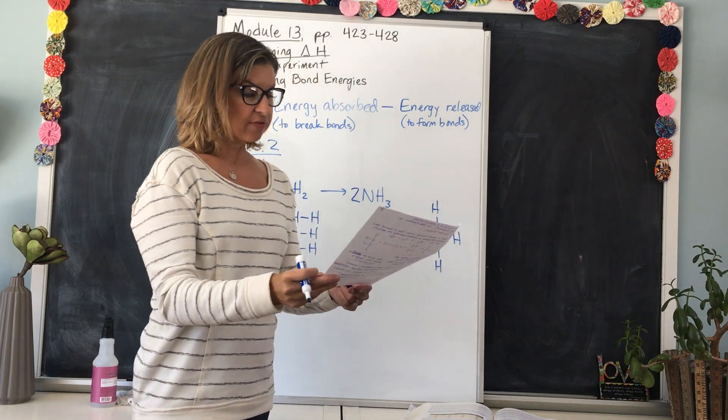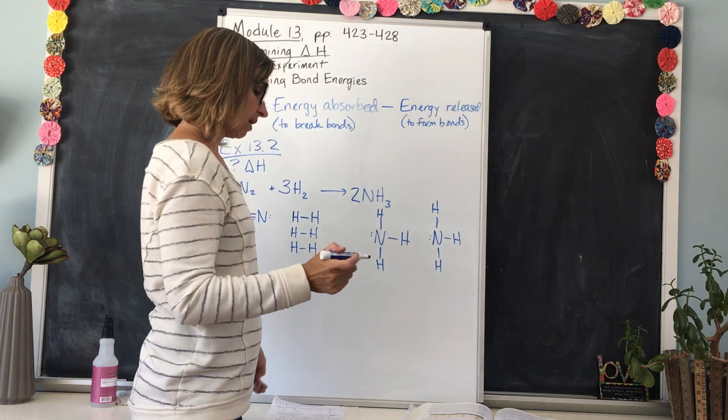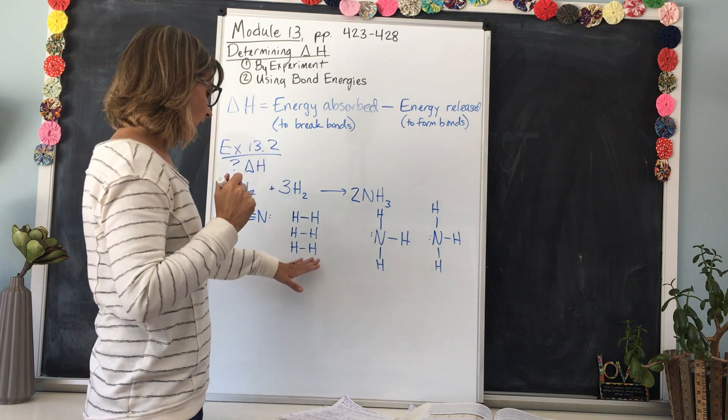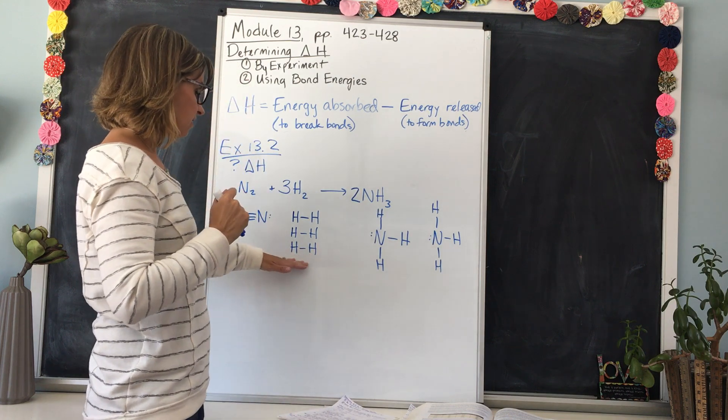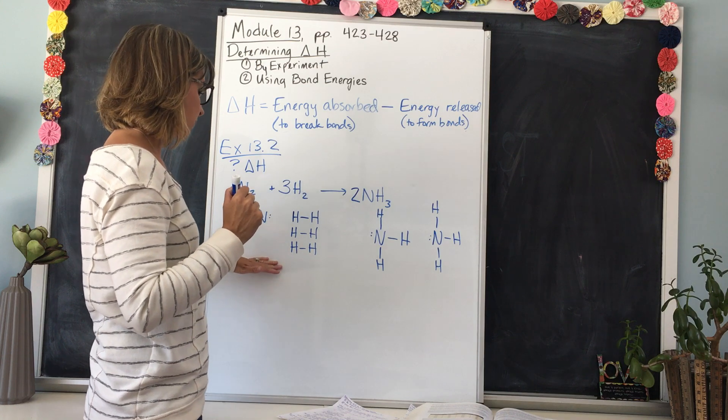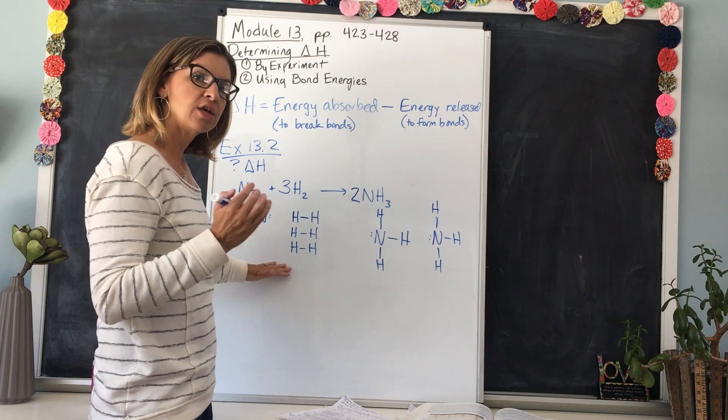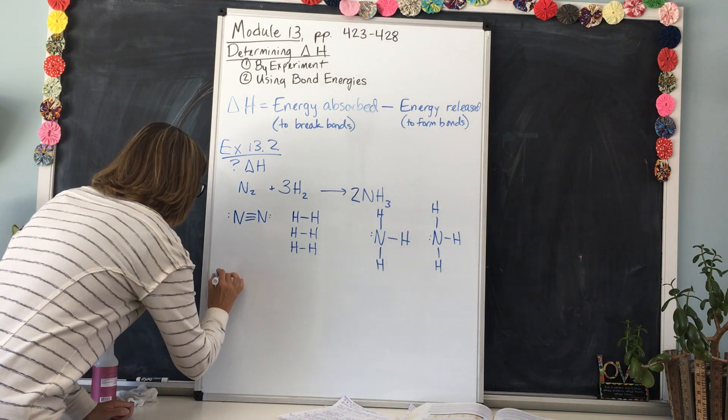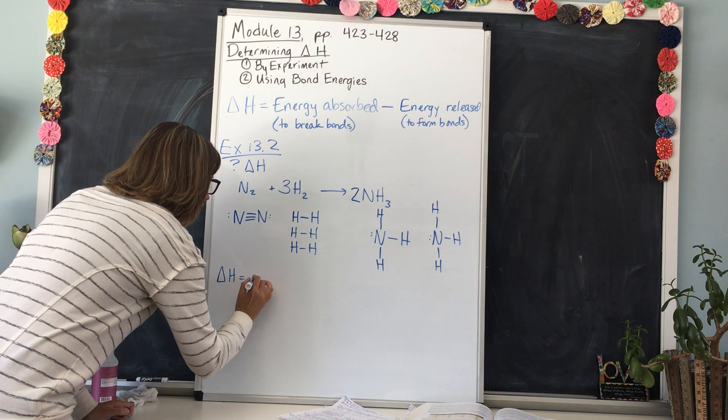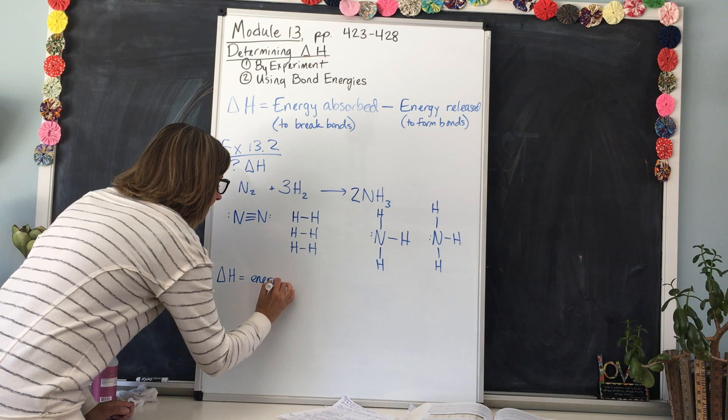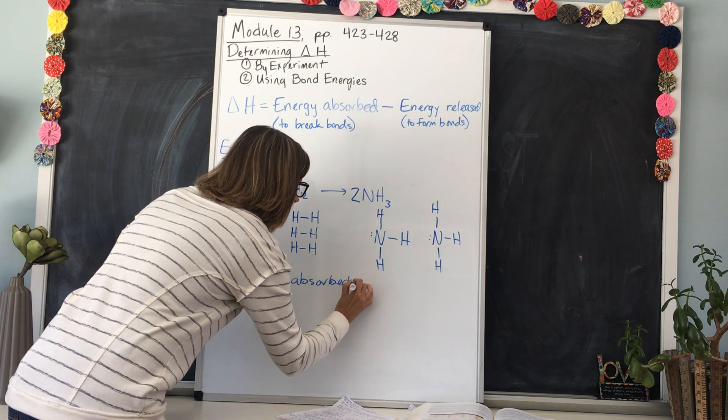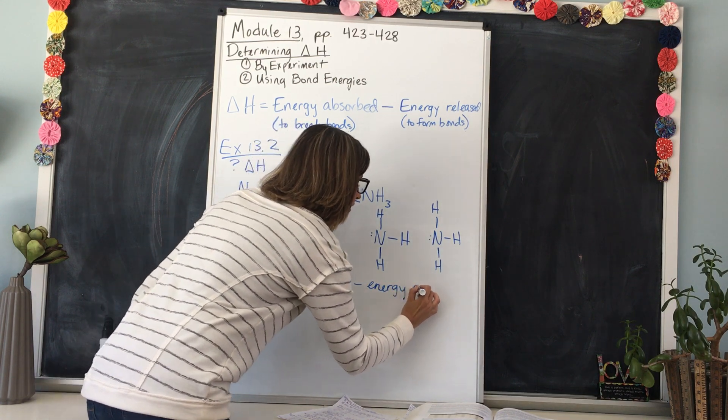Now this is where the bond energies come in from table 13. So on the reactant side, these are the bonds that are being broken, so this is the energy that is being absorbed. Remember, delta H equals energy absorbed minus energy released.